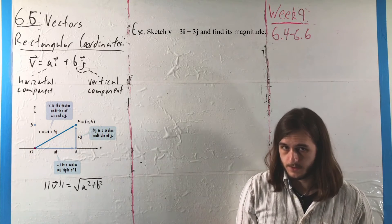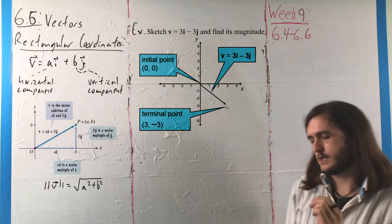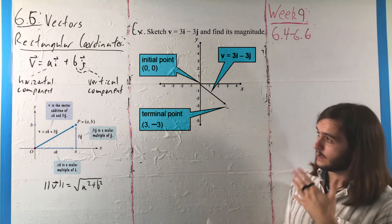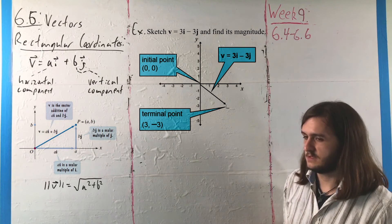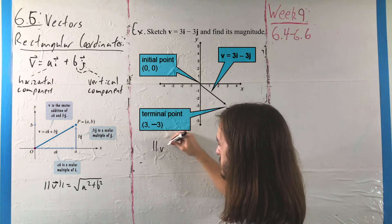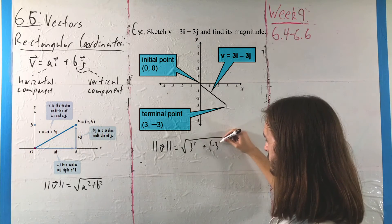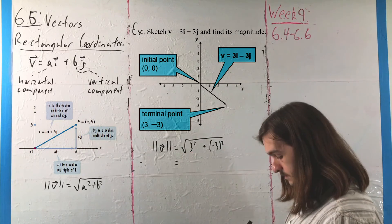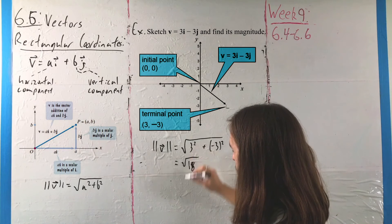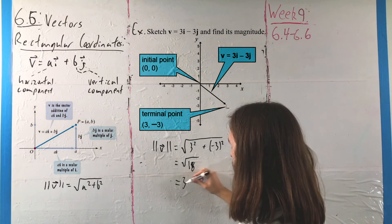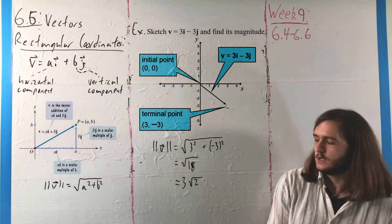If we build around the origin — as we said is our base place to start from — we're going to end up with something like this, going to the point (3, -3). To find the magnitude, we find how long that vector is: the magnitude of V is the square root of 3 squared plus negative 3 squared, which is the square root of 18. You can pull out a 9, which turns into 3 times root 2.